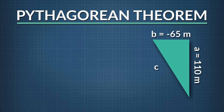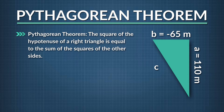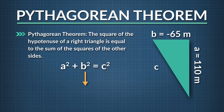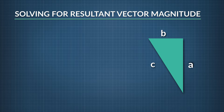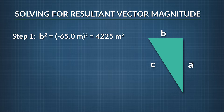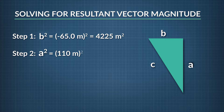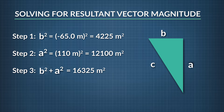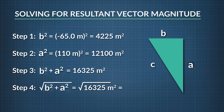Let's do magnitude first. To get the magnitude — the distance I have to go — we use the Pythagorean theorem. The square of the hypotenuse of a right triangle is equal to the sum of the squares of the other two sides: a² + b² = c², where c is the hypotenuse and a and b are the opposite and adjacent sides. Since we're looking for the magnitude of the hypotenuse, we rearrange to c = √(a² + b²). Step 1: square the opposite side, (−65.0 m)² = 4225. Step 2: square the adjacent side, (110 m)² = 12100. Step 3: add those results. Step 4: take the square root of the sum, and we get 127.8 meters as the distance I need to travel.